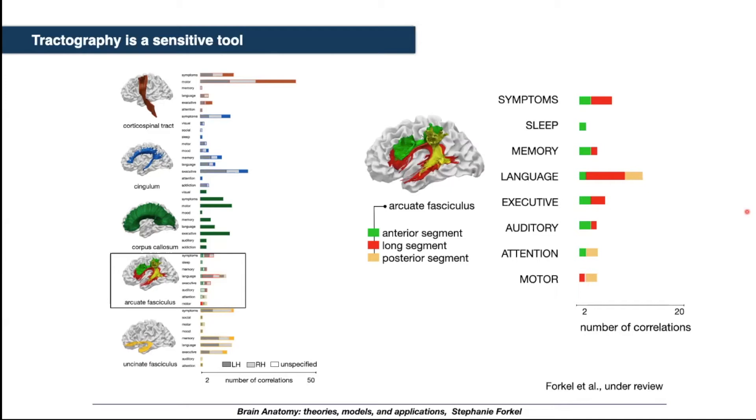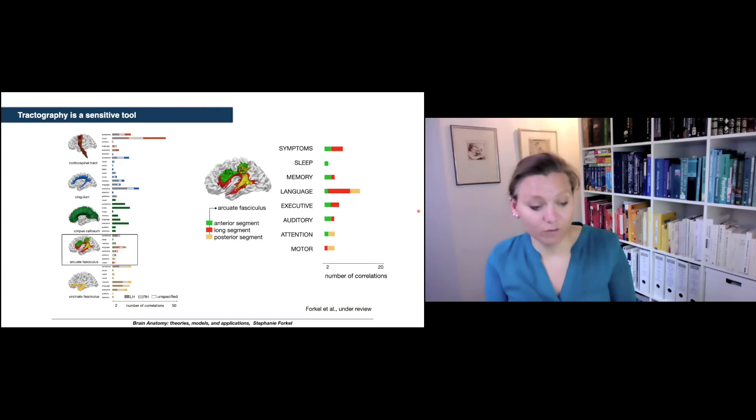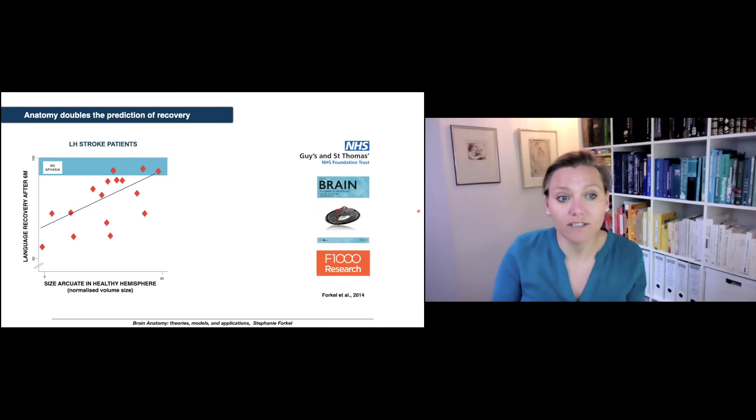If we look at the arcuate fasciculus here, you can appreciate that it correlates not just with language, which is something we already know, but it also has been shown to be implicated with sleep, memory, executive cognitive functions, auditory functions, attention and motor functions. And then obviously when disconnected, also with clinical symptoms of various sorts. What you can also see is that not every segment of the arcuate is equally impacted across the profile. What we can see from the study is that yes, tractography is a sensitive tool to study variability, and there seems to be a correlation with cognitive clinical differences.